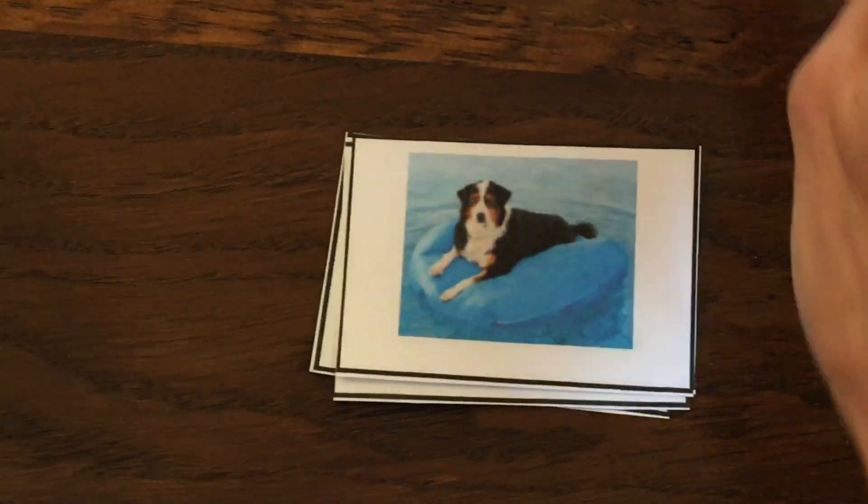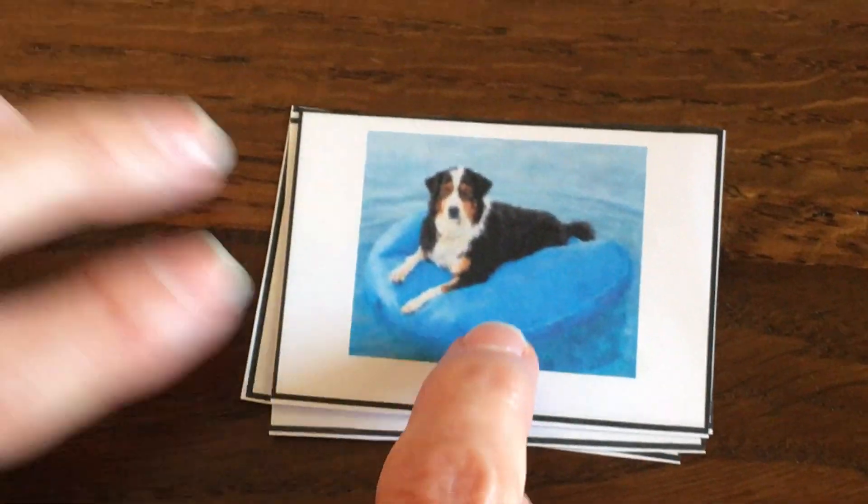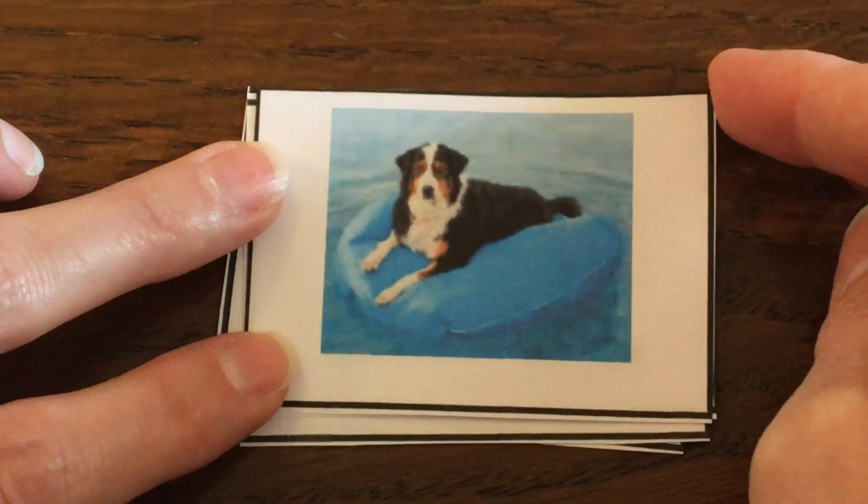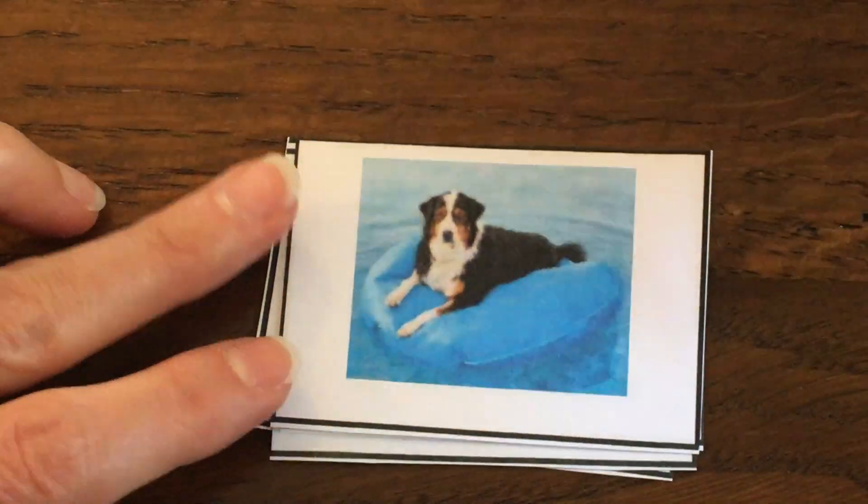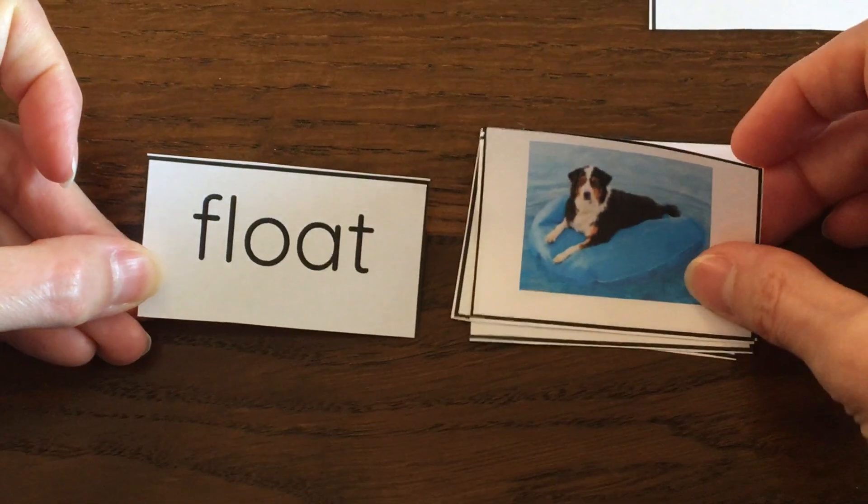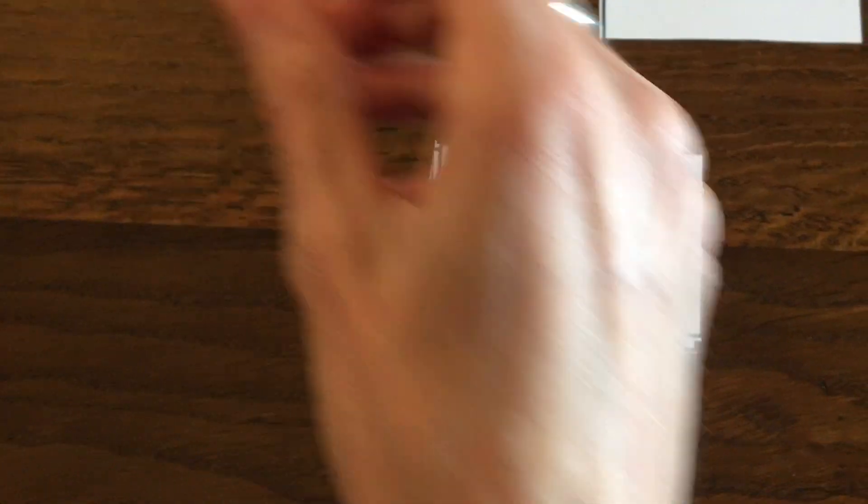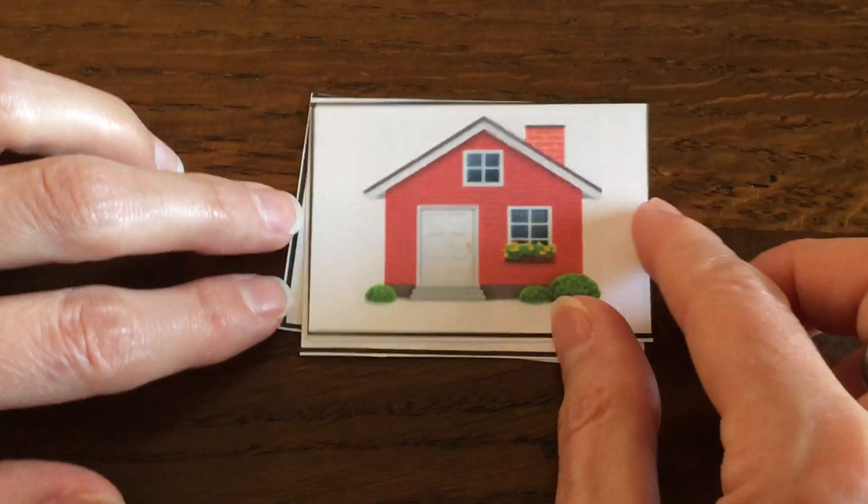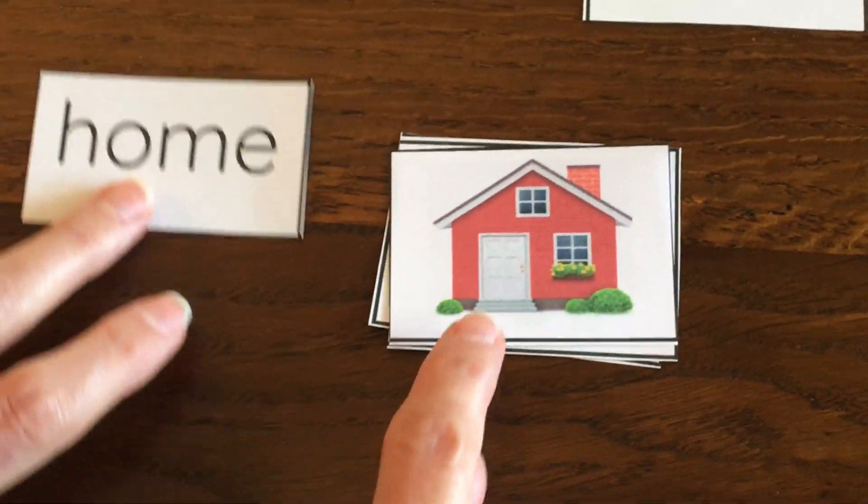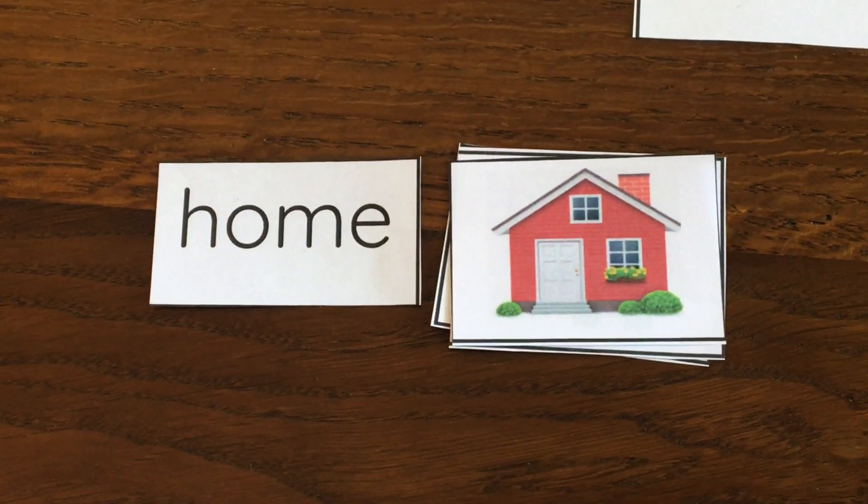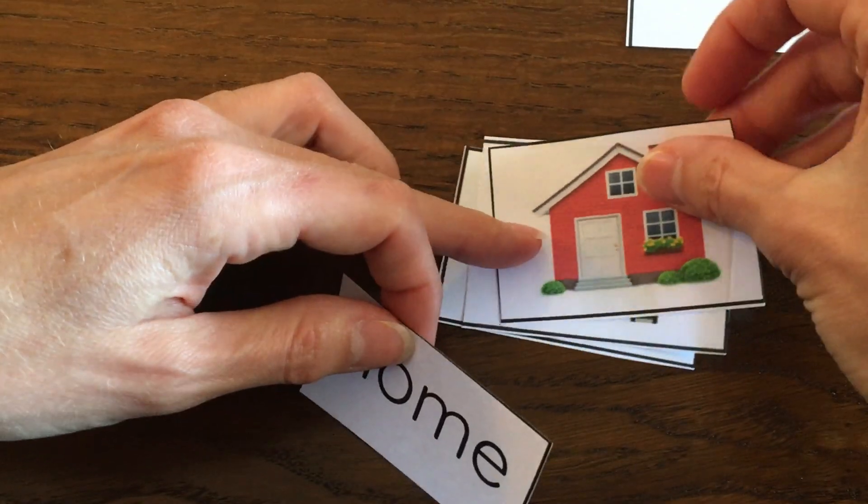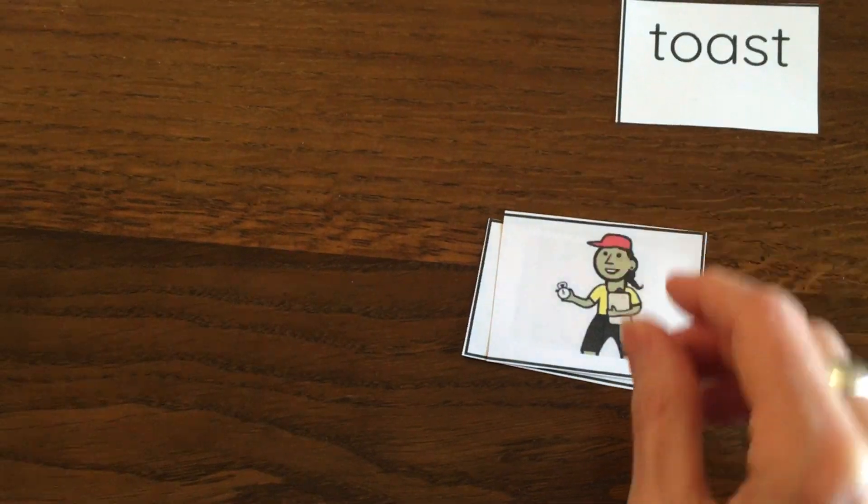Look at this dog. He is on a raft in the water. He is floating. So I'm going to match this picture with this word, float. That looks like fun. Here is a house. Your home might look like this. Or your home might be an apartment. So those two are a match.